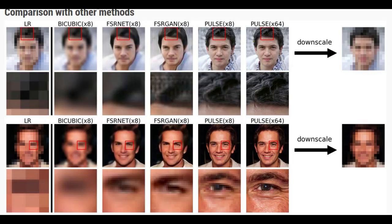Traditional approaches take a low-resolution image and guess what extra pixels are needed by trying to get them to match, on average, with corresponding pixels in high-resolution images the computer has seen before.